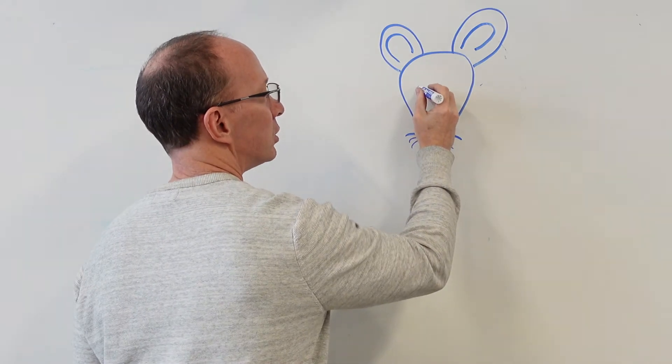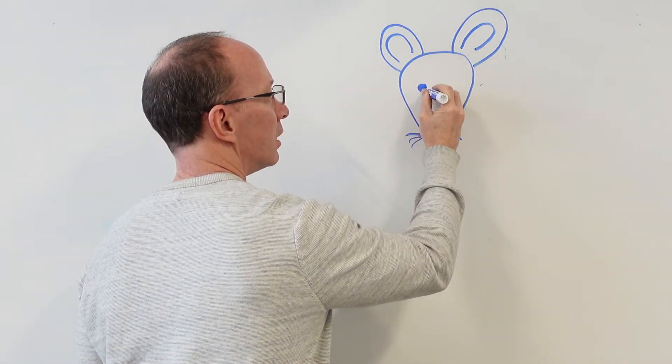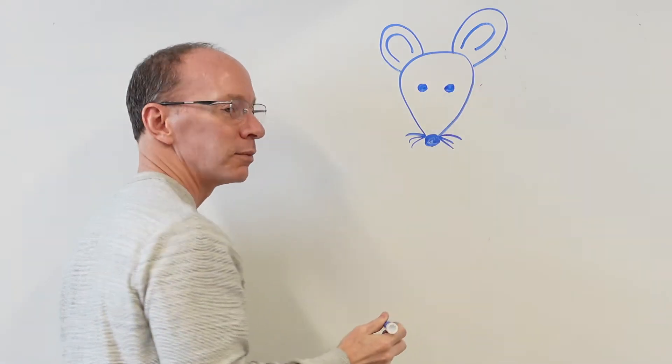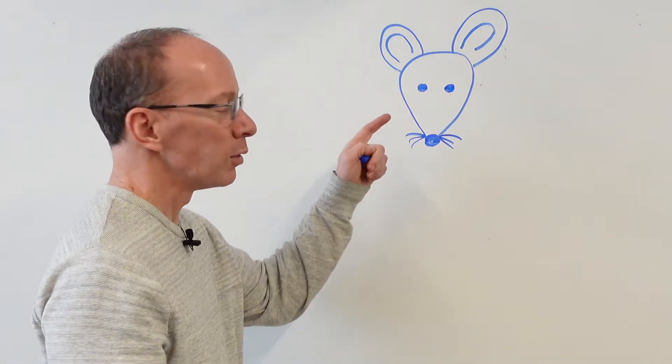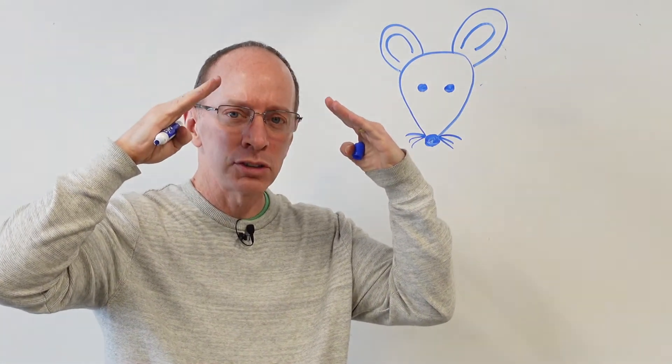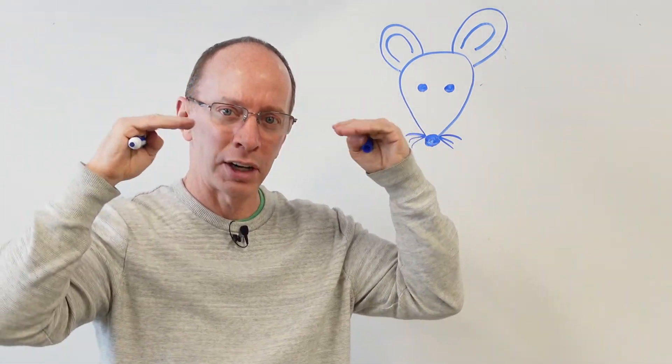And now all you have to do is draw the eyes. You can draw different types of eyes like that if you want to. And if you want to, you can do some like your eyebrows. The eyebrows will kind of determine the expression of your mouse.